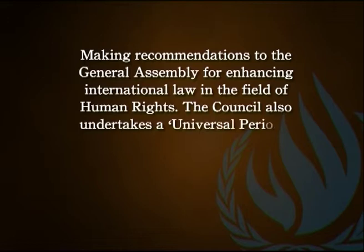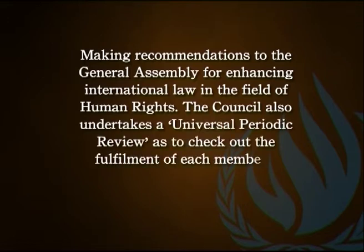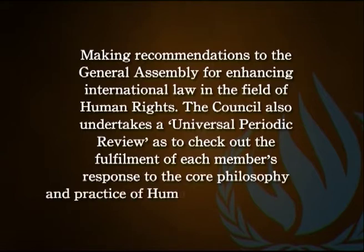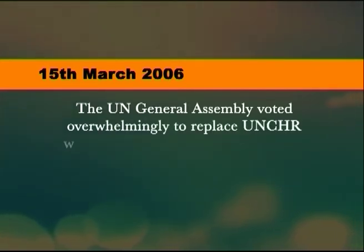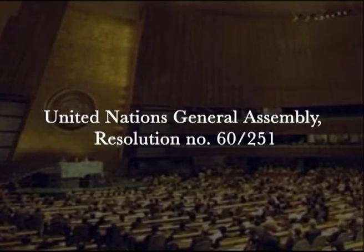The Council also undertakes a Universal Periodic Review to check the fulfilment of each member's response to the core philosophy and practice of human rights obligations. The close linkage between the Council and the General Assembly created a fluid procedure and intervention in the field of human rights. On 15 March 2006, the UN General Assembly voted overwhelmingly to replace UNCHR with the UN Human Rights Council, created by Resolution 60-251. Its first session took place from 19 to 30 June 2006, and one year later the Council adopted its institution-building package to guide its work and set up its procedures and mechanisms.